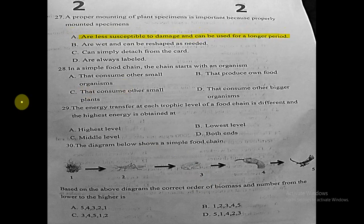Question twenty-eight: in a simple food chain, the chain starts with an organism that does what? It starts with an organism that produces its own food — which is plants. The correct answer is: that produces its own food.